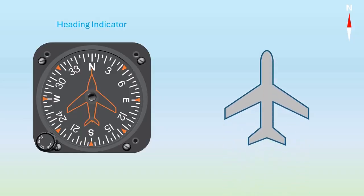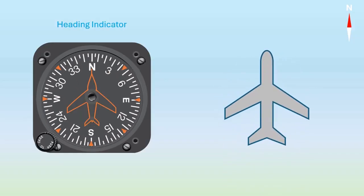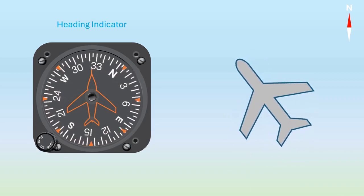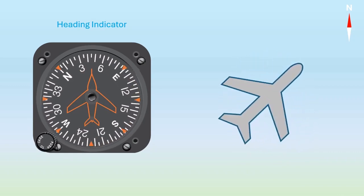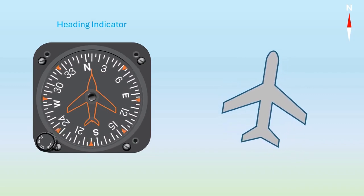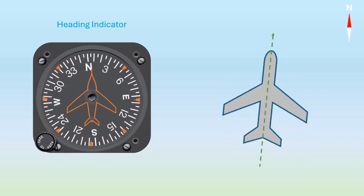The heading indicator features a compass card that rotates whenever the airplane changes direction. Notice the small plane symbol on the instrument face. It always points to the aircraft's current heading, displayed based on a 360-degree azimuth. Just a quick reminder, the heading of your aircraft is the direction its longitudinal axis and nose are pointing to.